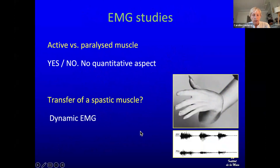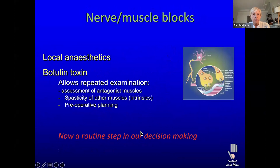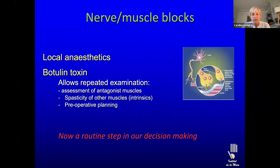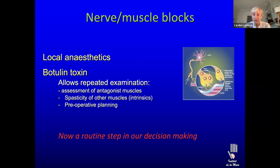Botulinum toxin is going to be extremely helpful here, because if there is spasticity of the flexor muscles, after putting toxin in those spastic muscles and relieving the spasticity, maybe we can evaluate the antagonist muscles and find out if they are active or not.